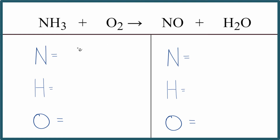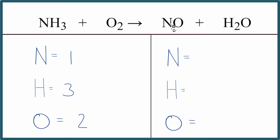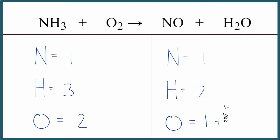The first thing we need to do when we balance equations is count up the atoms on each side. So we have one nitrogen, three hydrogens, and two oxygens on the reactant side. On the product side, we have one nitrogen, two hydrogens, and one oxygen — plus we have this one oxygen here, so don't forget about that.